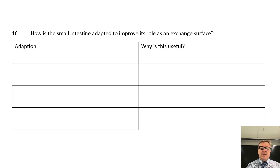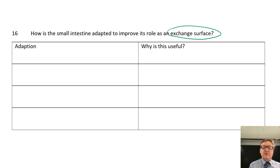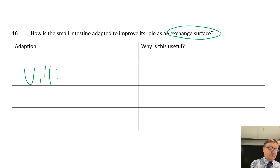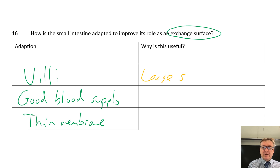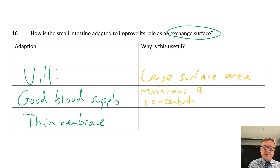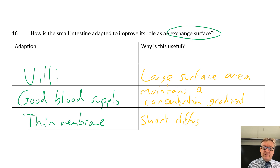Question number sixteen: how is the small intestine adapted to improve its role as an exchange surface? It exchanges things like amino acids, lipids, fatty acids, glycerol, and glucose. Its adaptations are: it has villi - little hairs sticking out of the inside - which give it a large surface area; a good blood supply, which maintains a concentration gradient; and a thin membrane, which gives it a short diffusion distance.